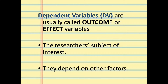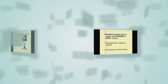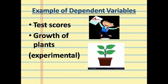Earlier we had the independent variable; now we have the dependent variable. The dependent variable is the researcher's subject of interest — they depend on other factors. Examples include test scores and the growth of plants, especially in experimental research. Going back to the independent variables — age, gender, and your habit of using gadgets can all affect your test score.